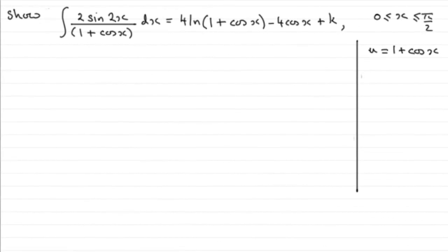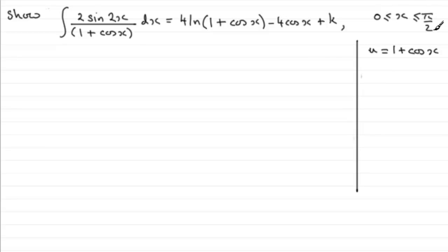For this part, we're told to show that the integral of 2sin(2x) over (1 + cosx), integrated with respect to x, is equal to 4 times the natural log of (1 + cosx) minus 4cosx plus a constant k of integration. Remember that x is defined between 0 and π/2 inclusive. We've got to show this using the substitution u = 1 + cosx.